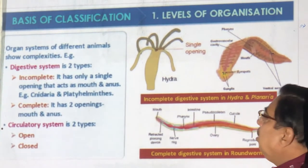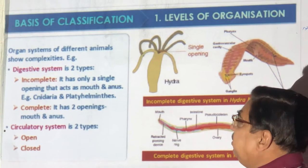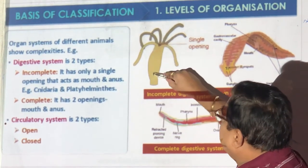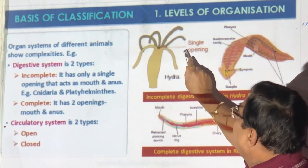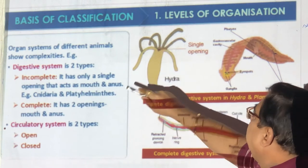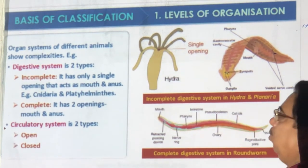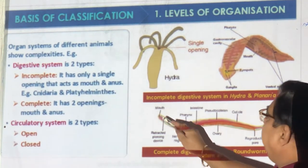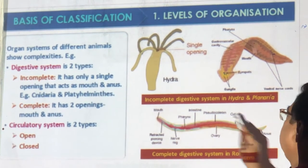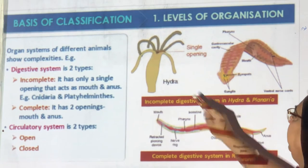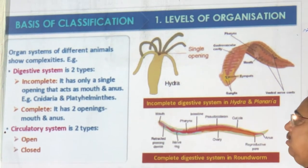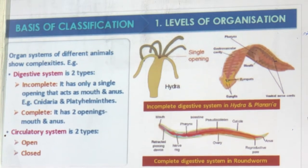Regarding organ systems, you may have a digestive system but it may be incomplete — with only one opening called the hypostome, where food enters and exits from the same place. Cnidaria and Platyhelminthes have only one opening. When the digestive system is complete, food enters from the mouth and leaves at the opposite side — mouth to anus. Next we see open and closed circulatory systems.